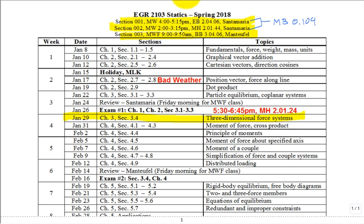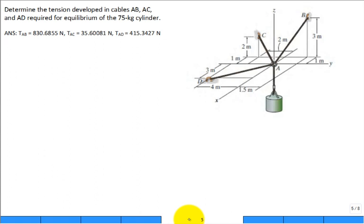So now we'll move into this section 3-4, which deals with three-dimensional force systems. Let's take a look at this problem. It says determine the tension developed in the cables A to B, A to C, A to D required for equilibrium of the 75-kilogram cylinder. So here's our cylinder, and it has a mass of 75 kilograms.